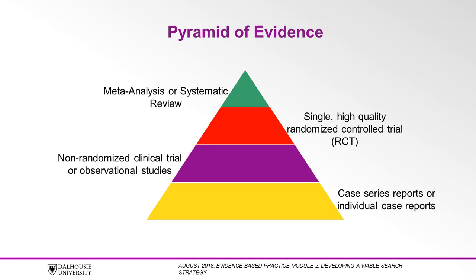The next best level of evidence would be finding a single high-quality RCT. If one fails to find a meta-analysis or a RCT, one might have to rely on weaker forms of evidence such as non-randomized clinical trials or observational studies. The weakest form of evidence are case series reports or individual case reports. For some questions, there may be no published evidence at all.